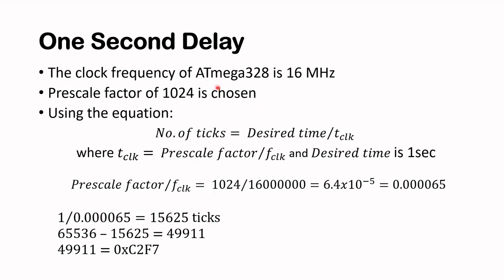Since Timer1 is a 16-bit timer counter, it has a maximum of 65,536 counts. So the initial value to load is 65,536 minus 15,625, which equals 49,911 in decimal. Converting to hexadecimal gives C2F7 — the value used in the code.